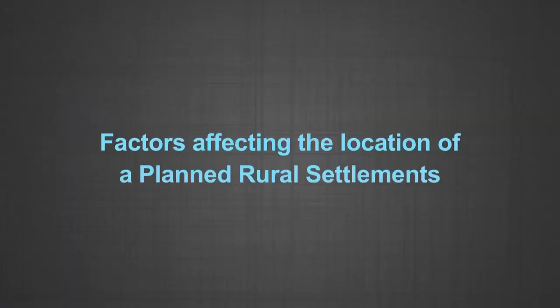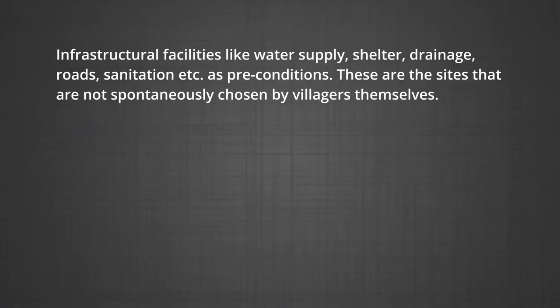Factors affecting the location of planned rural settlements are based on the need for infrastructural facilities like water supply, shelter, drainage, roads, and sanitation as preconditions. These sites are not spontaneously chosen by villagers themselves — planned settlements are constructed by governments by providing shelter, water, and other infrastructure on acquired land. The scheme of village formation in Ethiopia and the canal colonies of the Indira Gandhi canal command area in India are some good examples. Planned rural settlements are also found in Canada and the United States of America.